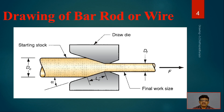In this representative sketch of wire drawing, the starting stock is denoted with suffix zero, meaning original dimensions, which will be converted to the final product. Alpha is the approach angle; the draw die is associated with it, and L with subscript c is the contact length where the angular part of the draw die interacts with the workpiece, squeezing it into diameter d_F. The final work size and the drawing force F are also indicated.